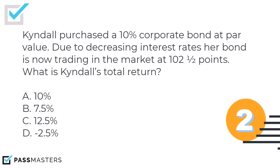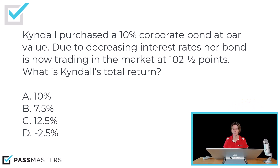Kindle purchased a 10% corporate bond at par value, so she paid $1,000. Due to decreasing interest rates, her bond is now trading in the market for 102.5 points. What is Kindle's total return? Yield plus growth divided by what was paid for the bond. The yield is 10% — 10% of par value is $100 in annual interest. The growth: two and a half points. A point on a bond is worth $10, so two points would be $20 and half a point is $5. So $100 plus $25 divided by $1,000 — Kindle's total return is 12.5%.